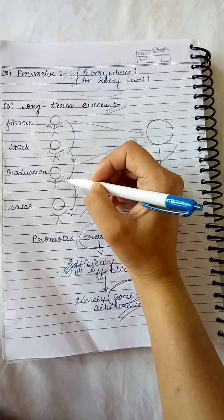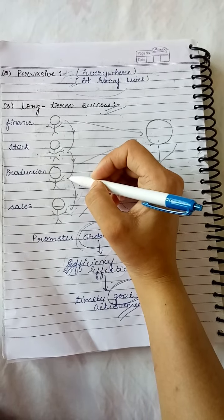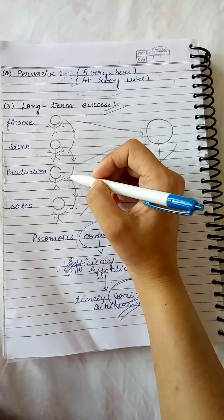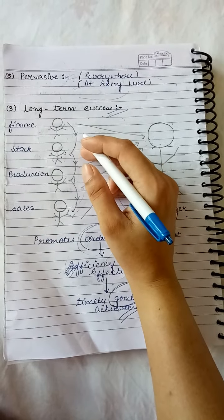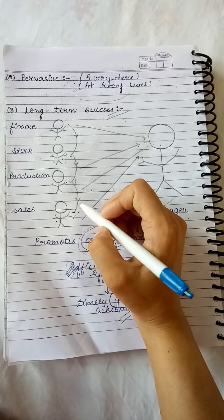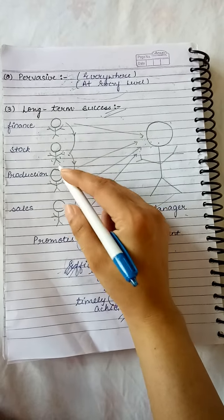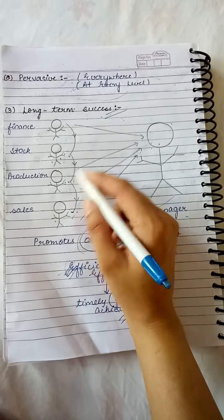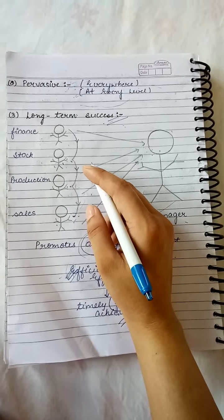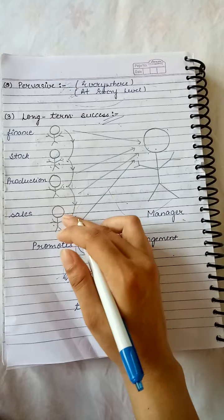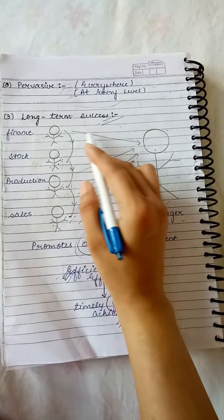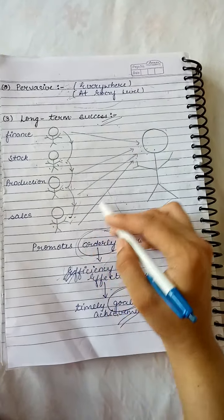Stock department, if they are synchronizing their activities with production department, they will say don't sit idle, we have enough raw material, produce. In the similar way, production department will tell sales that I have enough amount of products manufactured. So as much as you want, sell it. So ultimately what happened? Coordination synchronized all these activities.